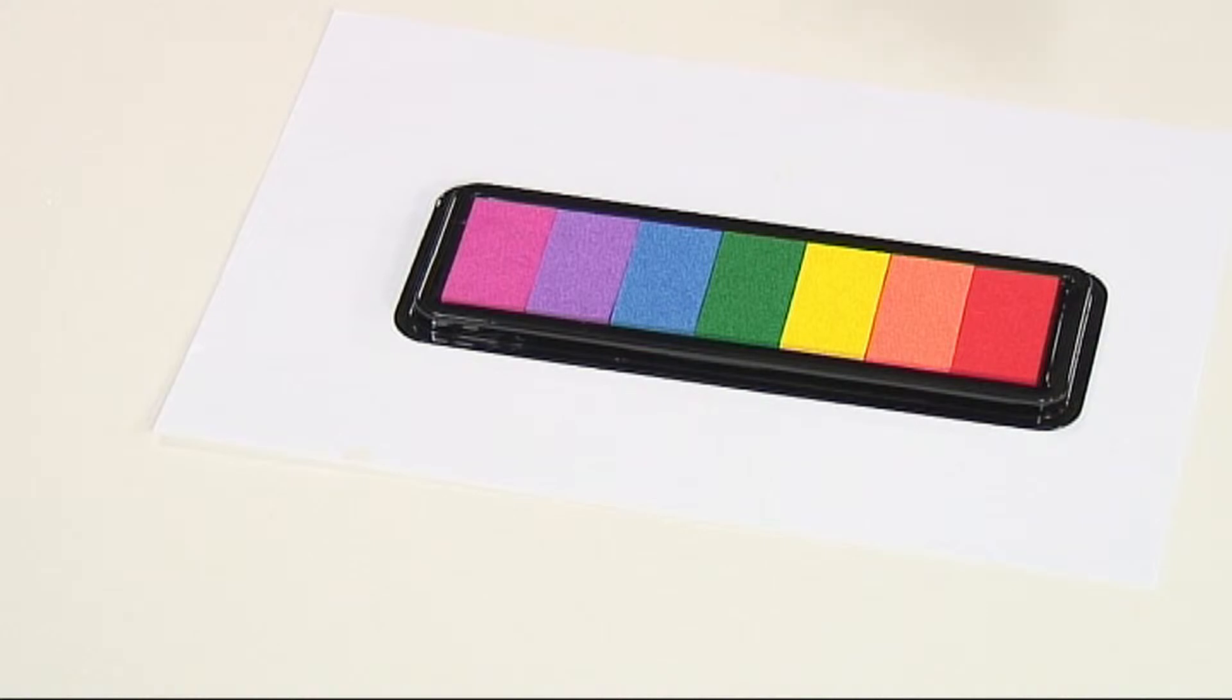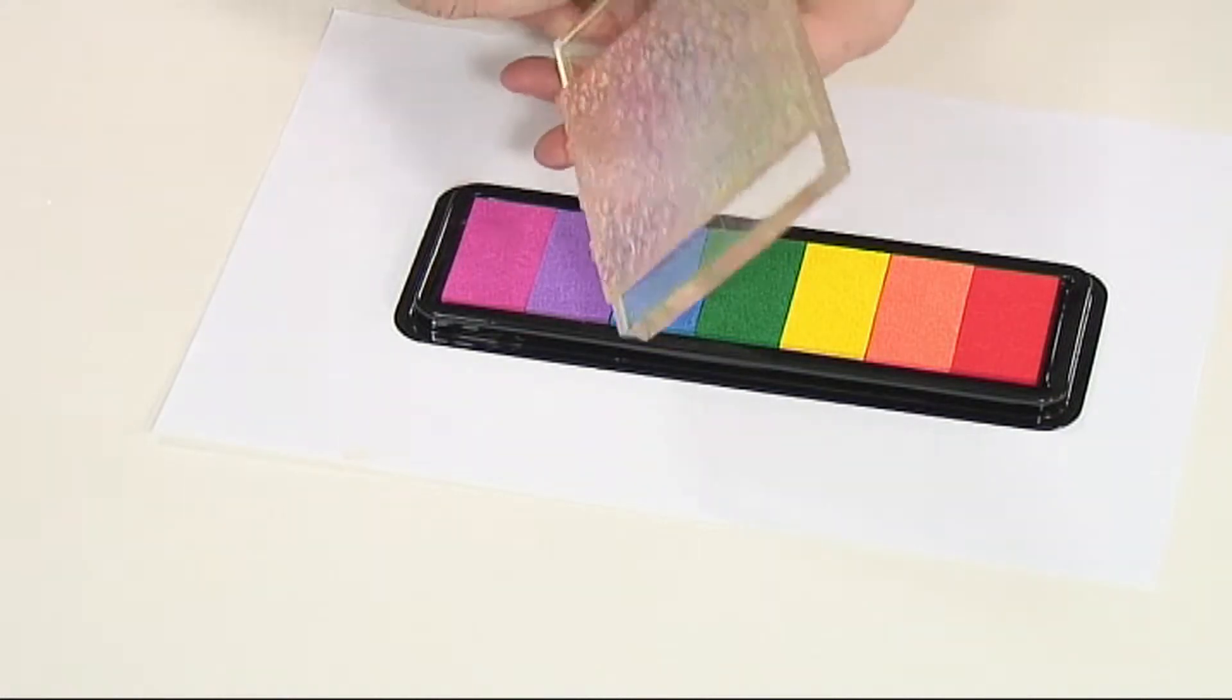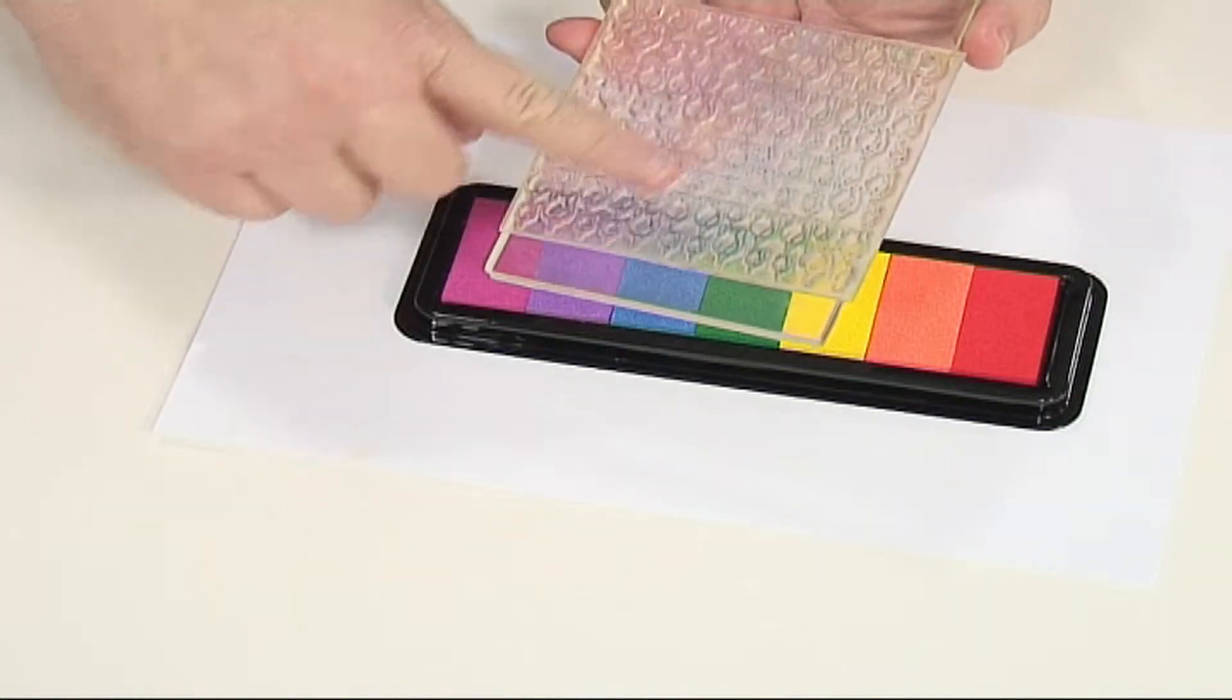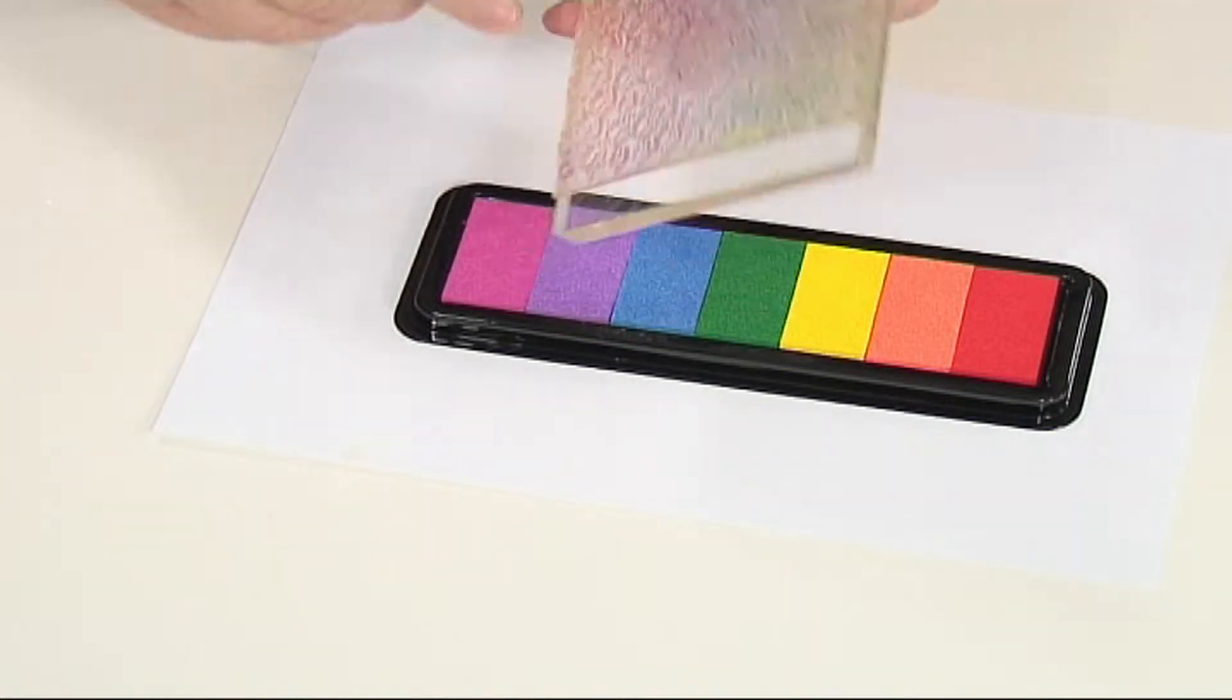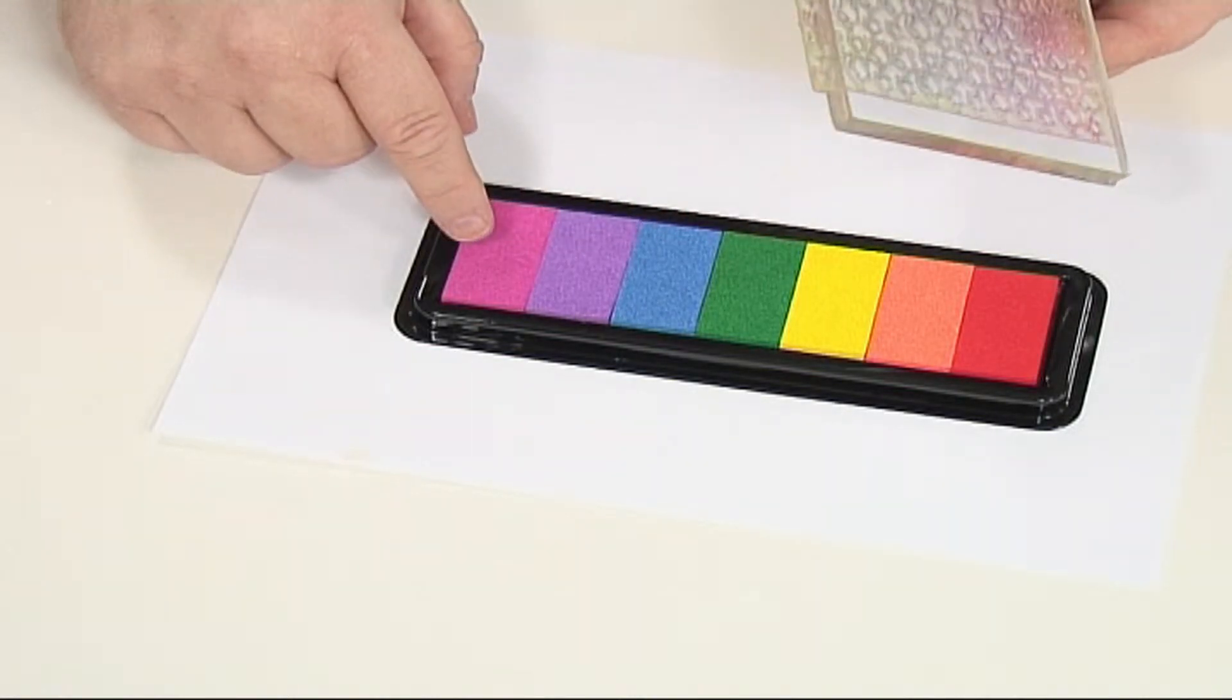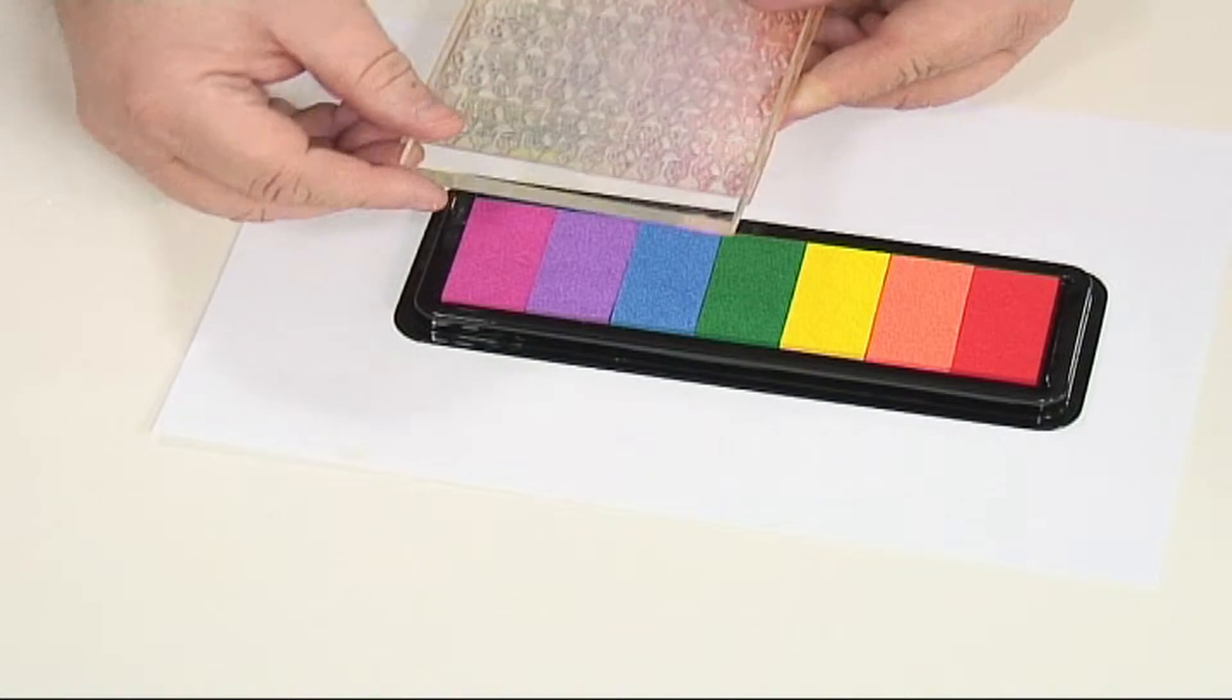Now I've got the ink pad there ready to ink up, and I've got my rubber stamp here just stuck onto the acrylic block. This has got all the heads of the tulip on. Now I'm just going to block stamp this—I'm going to use these four colors here: the pink, the purple, the blue, and the green.